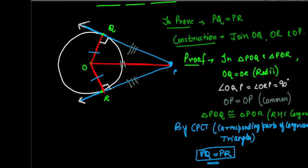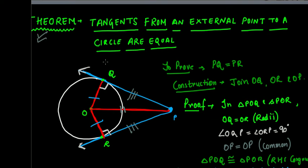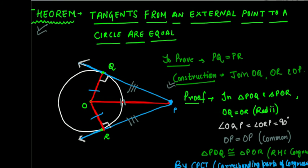I hope this is clear. Easy theorem to understand. So that is how we prove that the length of tangents from an external point to the circle are equal. The statement and proof of this theorem are both important. If there's any doubt, please post it in the comment section below.